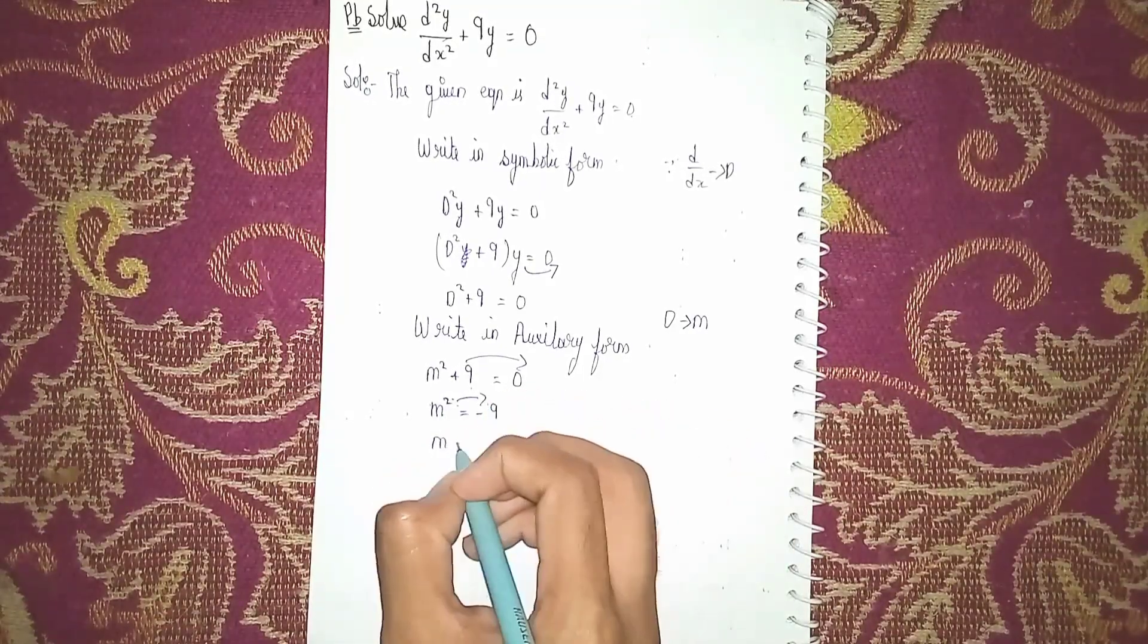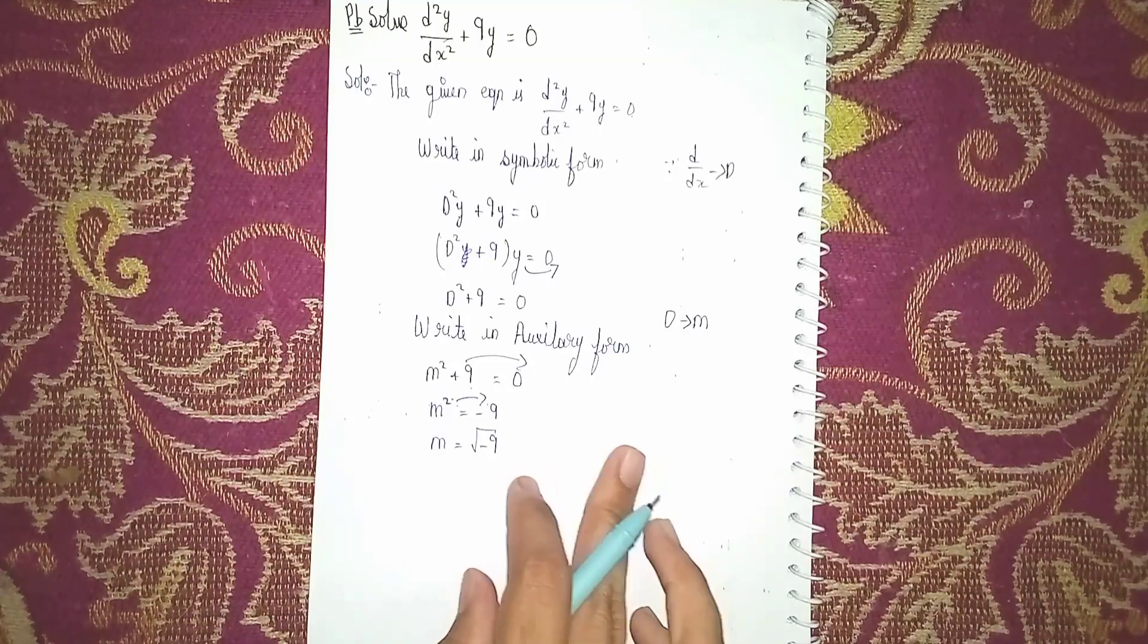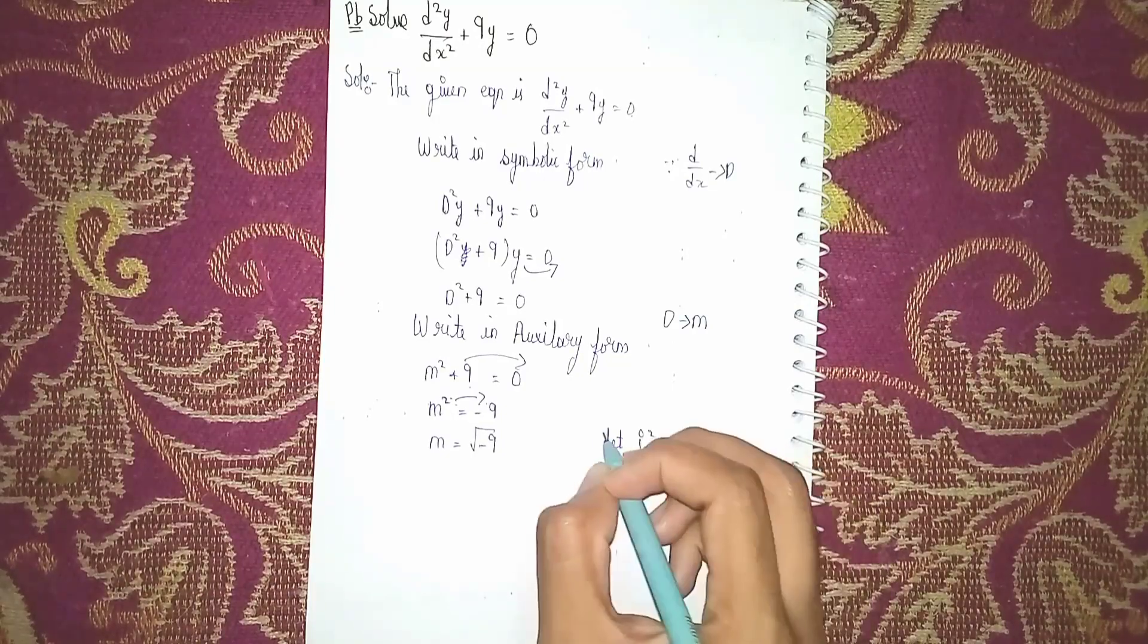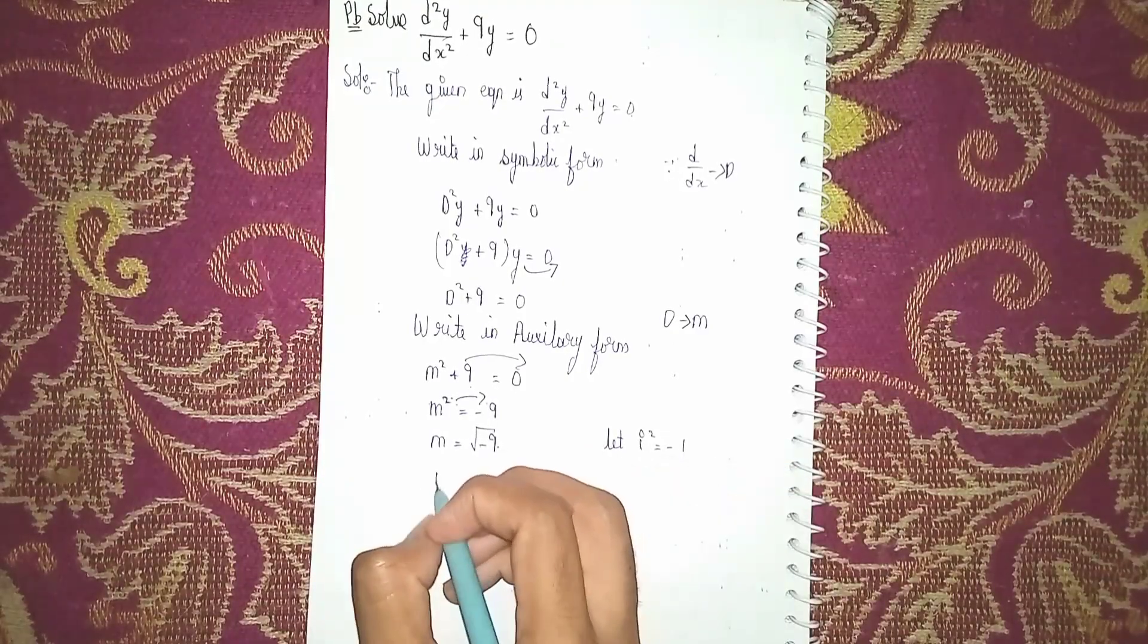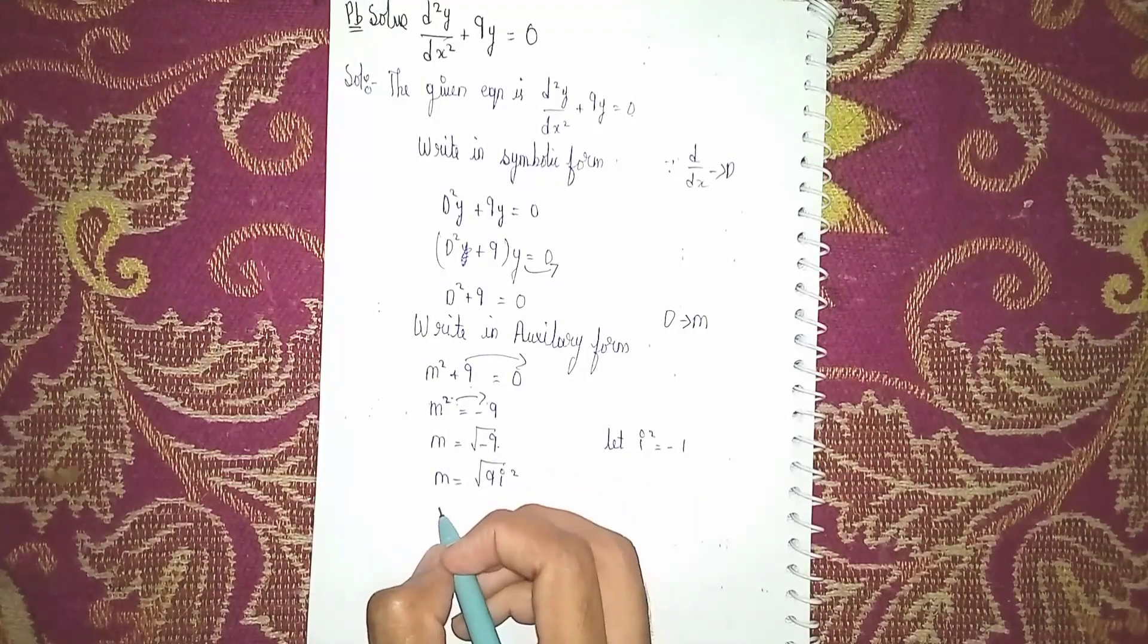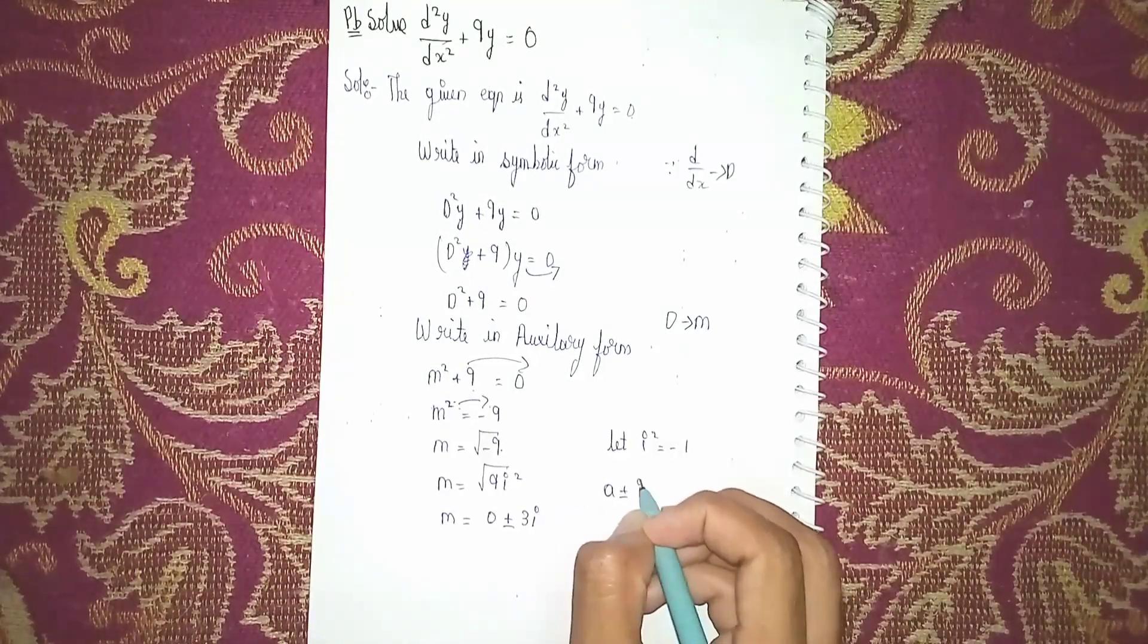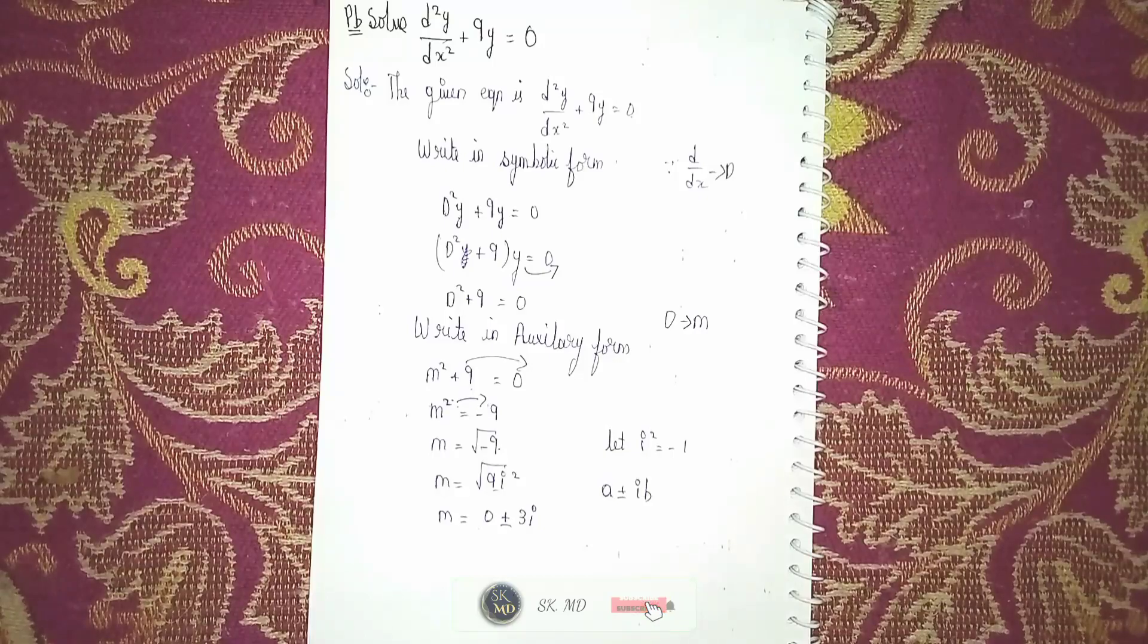So here we have the root of 9 as 3, but there is minus. Let i² = -1 (imaginary). So it becomes m = √(9i²). At last m = 0 ± 3i. I am writing 0 means it is in the form a ± ib. This is ib. We don't have a, so I'm writing 0 here. So this is a and this is b.